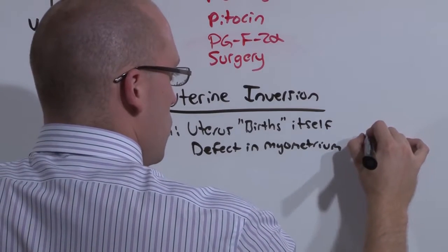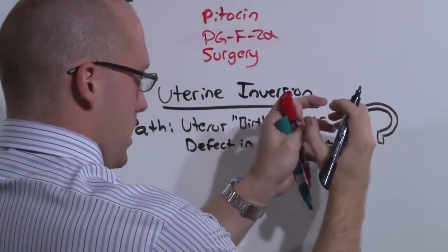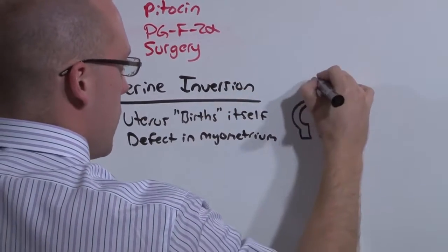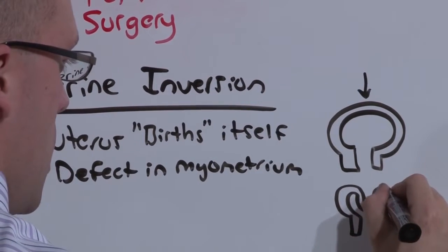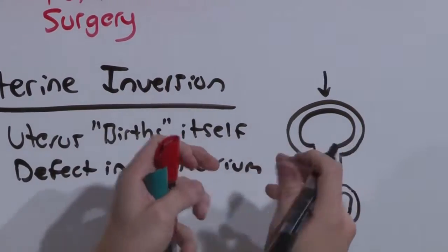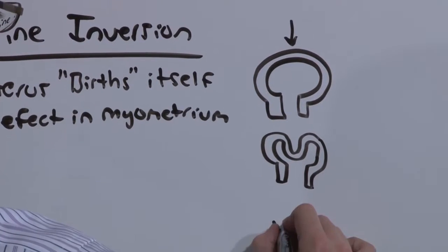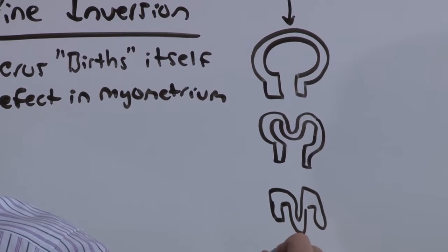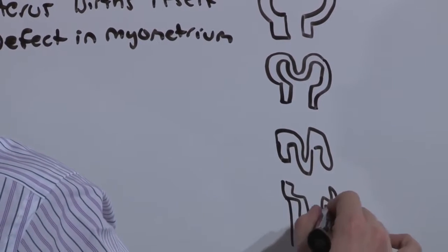What happens is that the normal uterus expels all the placental contents and then it tries to contract down. The idea is that it goes from a big uterus all the way it shrinks back down. Because there's a defect in the myometrium, it begins to fall into the uterus lumen. Now the rest of the uterus, as it contracts down, pushes that piece further and further through the birth canal until eventually it simply inverts.